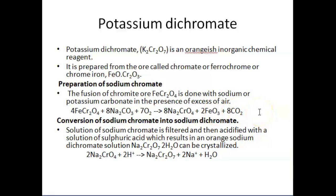The second step is the conversion of sodium chromate into sodium dichromate. The solution of sodium chromate is filtered and then acidified with sulfuric acid, which results in an orange sodium dichromate solution that can be crystallized. The reaction is: 2Na2CrO4 + 2H⁺ → Na2Cr2O7 + 2Na⁺ + H2O.